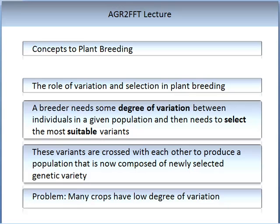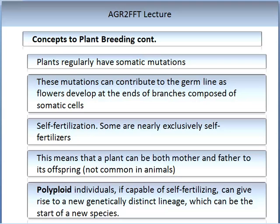There is a problem, however. In the monocultural type systems that we have bred over centuries, many crops now have a low degree of variation. This is only a problem from a breeding perspective — it is not a problem from a farming perspective; in fact, it is a highly regarded trait from a farming management perspective. Plants regularly have what we call somatic mutations. These mutations contribute to the germline as flowers develop at the ends of branches composed of somatic cells. Some plants are capable of what we call self-fertilization, meaning the plant is both the mother and the father, and some plants are nearly exclusively self-fertilizers. Polyploid individuals are capable of self-fertilizing and can give rise to a genetically distinct lineage, which can be the start of a new species.